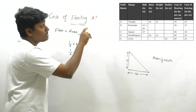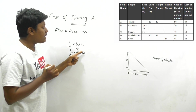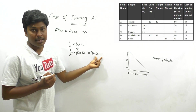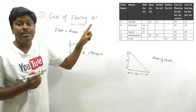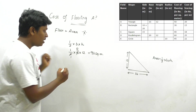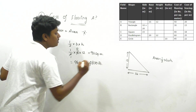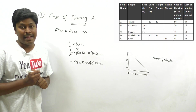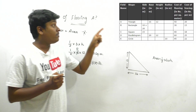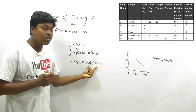Area = ½ × base × height = ½ × 16 × 12. Cancelling: ½ × 16 = 8, then 8 × 12 = 96 square meters. The cost of flooring is 50 rupees per square meter. So 96 × 50 = 4800 rupees. The cost of flooring for field A is 4800 rupees.